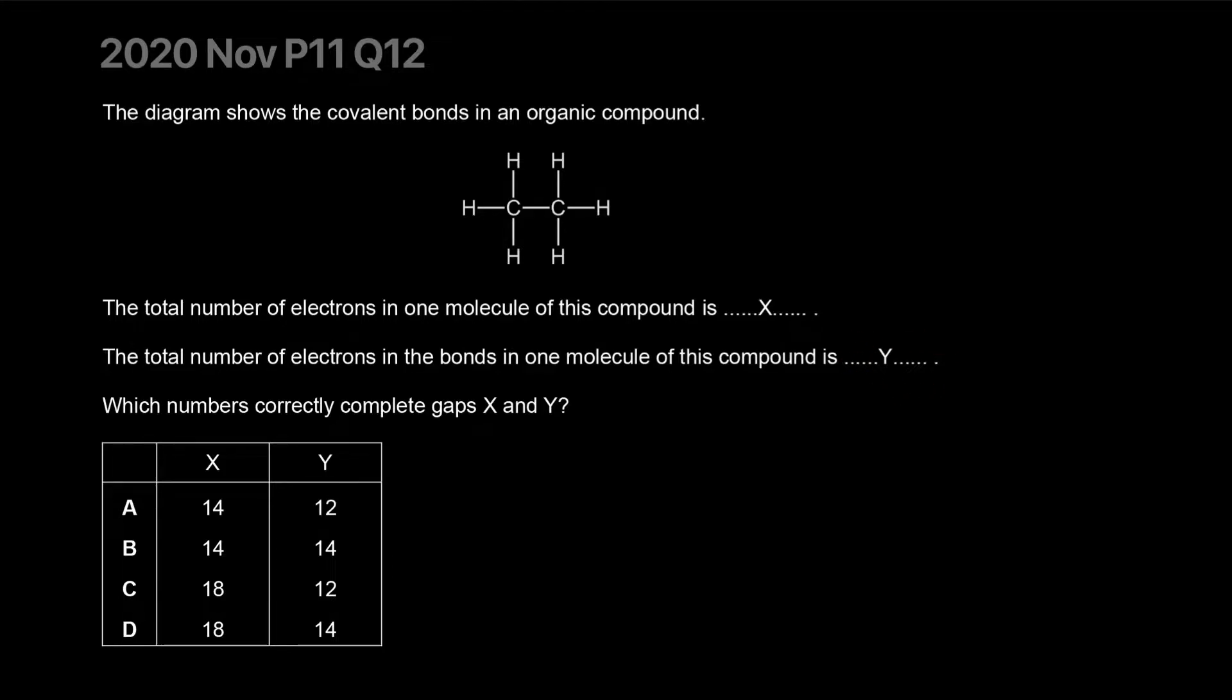You have two carbons and six hydrogens. The proton number for carbon is six, that means each atom would have six electrons. Same for hydrogen. So six times one, that is twelve. This is six. Add them together. Eighteen. So you should have 18 electrons per molecule.